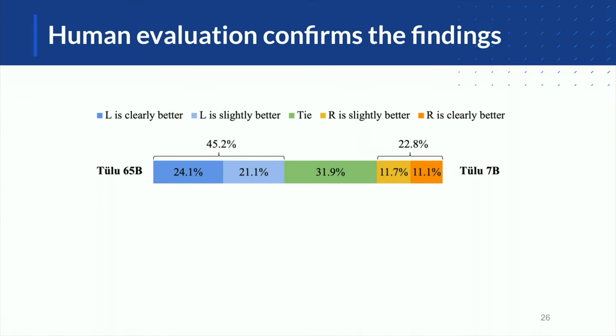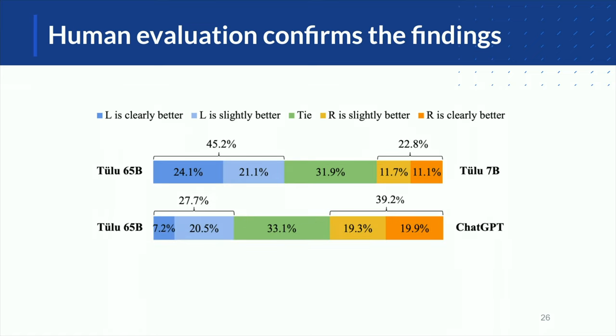Human evaluation confirmed our findings, showing that increasing model size improved performance. In a head-to-head comparison between generated outputs for the same instruction, TULU at 65B size versus TULU at 7B size showed that in 45% of cases, humans preferred the output from TULU 65B. Finally, comparing with ChatGPT output, we are lagging behind — approximately 27% of people preferred TULU 65B output versus 39% who preferred ChatGPT output. But it is not too far yet, and I'm still hopeful.